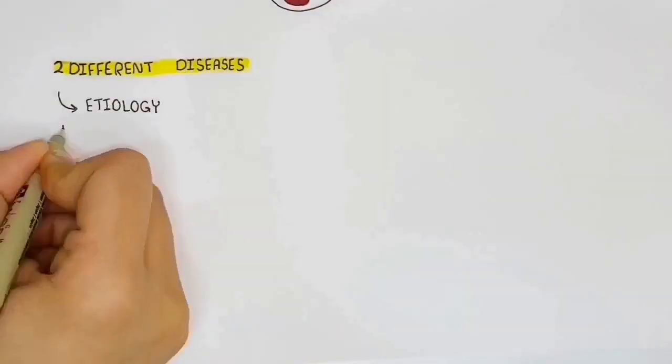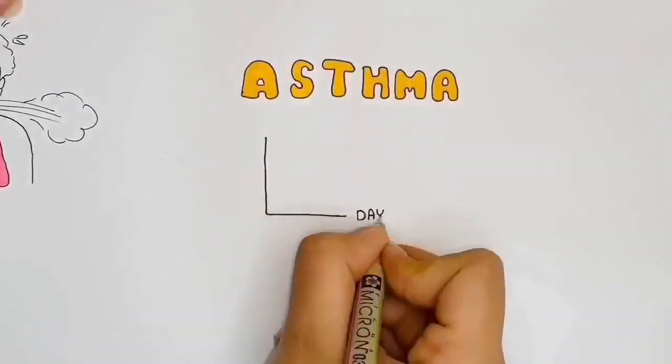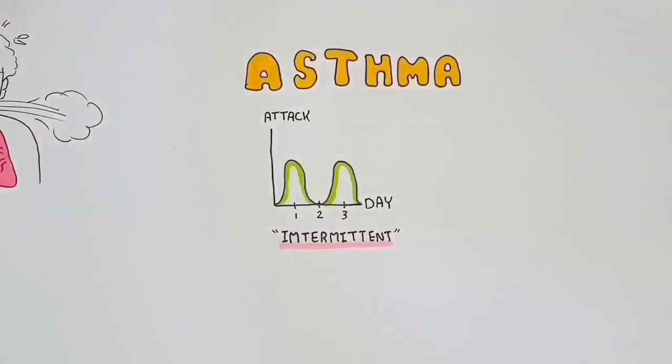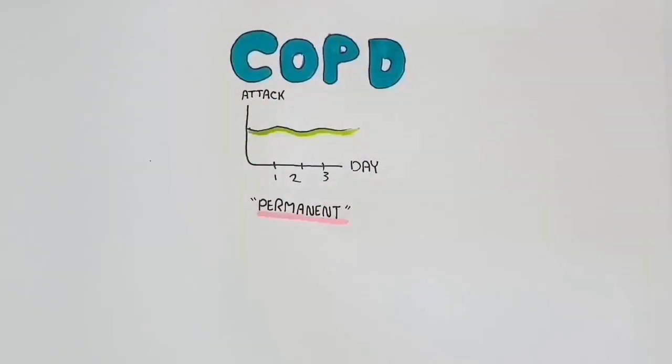However, there are two different diseases with different etiologies, symptoms, and response to therapy. Asthma is an intermittent airway obstruction, whereas COPD is more permanent airflow obstruction.